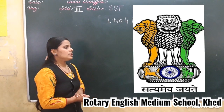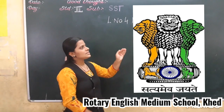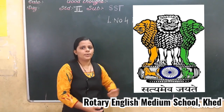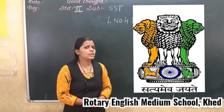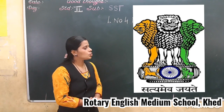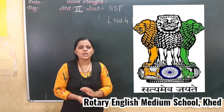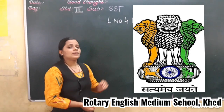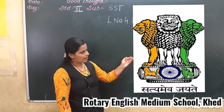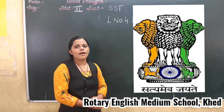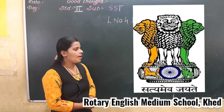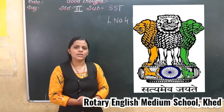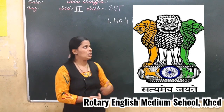So, at the bottom of this national emblem, you will see 'Satyameva Jayate' is written. Do you know the meaning of 'Satyameva Jayate'? In Hindi, it means truth alone triumphs. And this national emblem was adopted on 26th January 1950 as our national symbol.